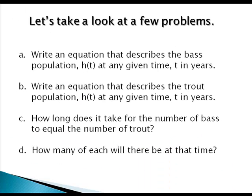So let's consider the following. First, I'd like to write an equation that describes the bass population as time goes by. Second, I'd like to develop an equation that describes the trout population as time goes by. Third, I'd like to answer the question: how long does it take for the number of bass to equal the number of trout, and how many of each will there be at that time?